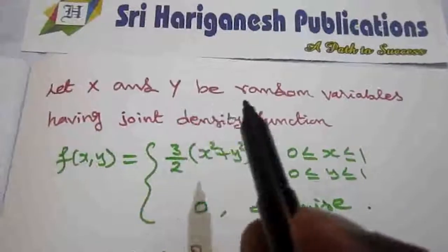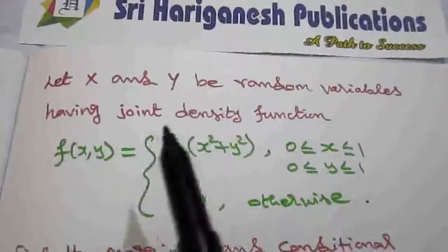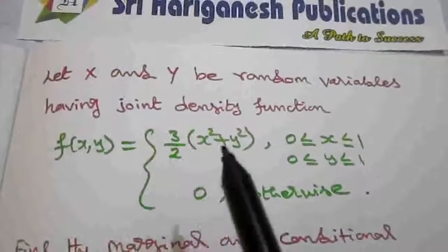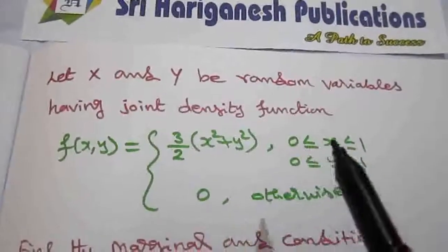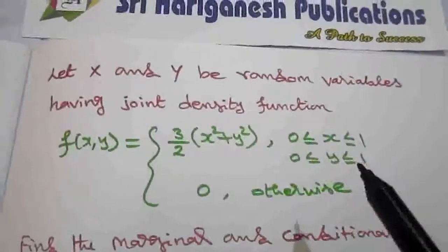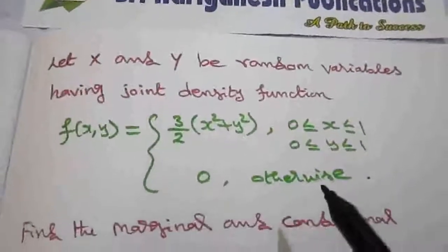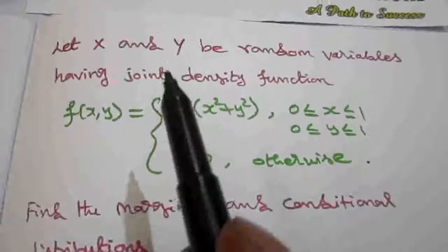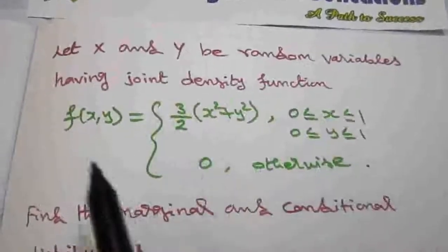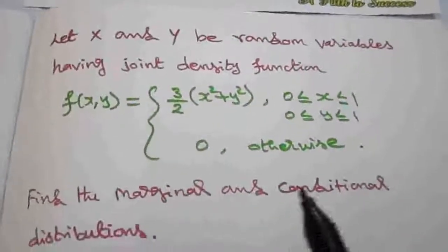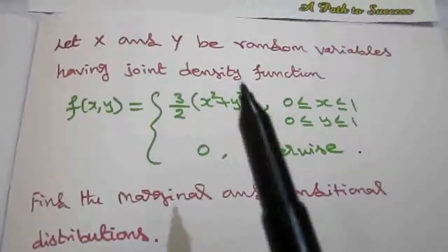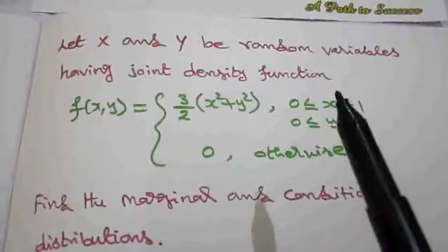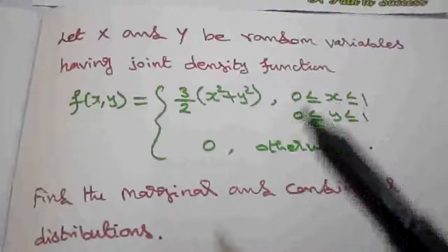Let x and y be random variables having joint density function f(x, y) = (3/2)(x² + y²) for x in [0,1] and y in [0,1], and 0 otherwise. Find the marginal and the conditional distributions. The joint probability density function is given; from this we want to find the marginal and conditional distributions. The variables are continuous random variables.